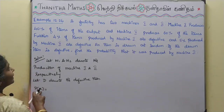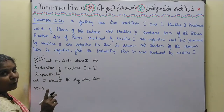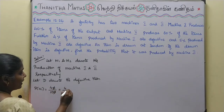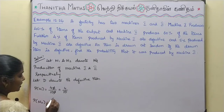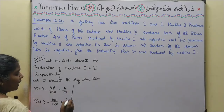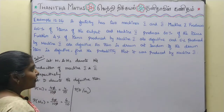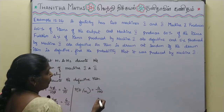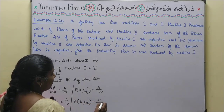P of M1, the production of machine 1, is 40%, so it is 40 by 100, which is 4 by 10. P of M2, the production of machine 2, is 60%, so it is 60 by 100, which is 6 by 10. P of D given M1 — the probability of a defective item from machine 1 — is 4%, that is 4 by 100. P of D given M2 — the probability of a defective item from machine 2 — is 5%, that is 5 by 100.